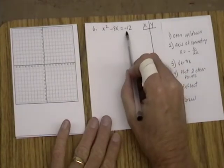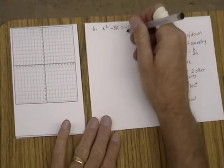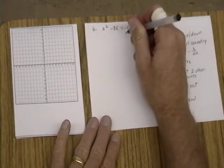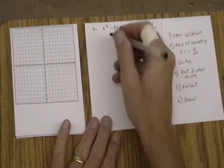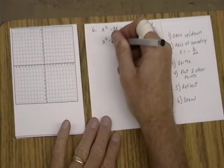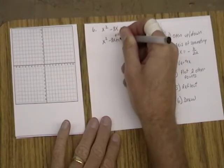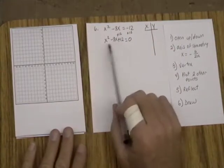And so we need to move this negative 12 to the other side. So to get rid of the negative 12, we have to add 12 to both sides. So that makes that zero. So we're going to have x squared minus 8x plus 12 equals zero. So now we have standard form.